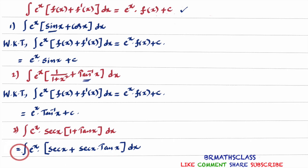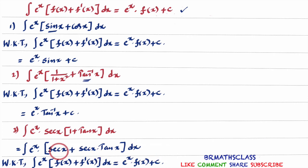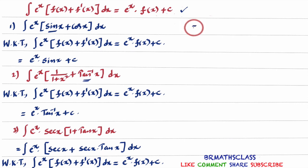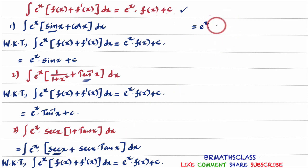So this is of the form: integral of eˣ into f(x) plus f'(x) dx. We know that integral of eˣ into f(x) plus f'(x) dx equals eˣ into f(x) plus c. From this, we can write the answer directly. The answer is eˣ into f(x), and here f(x) is secx. So the answer is eˣ into secx plus c.